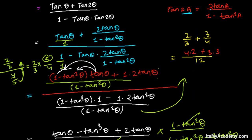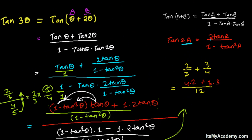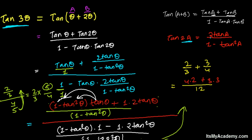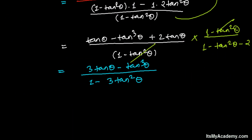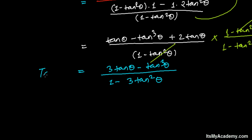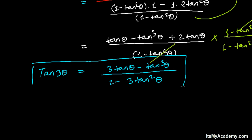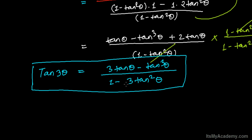Finally, what we can write is that tan(3 theta) is equal to 3 tan(theta) minus tan cubed(theta), all divided by 1 minus 3 tan squared(theta).